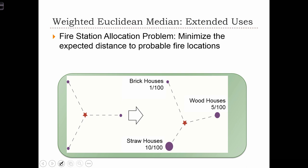There are many cases where we would like to use a weighted Euclidean median. For example, in this case we are trying to locate a fire station in order to minimize the distance to probable fire locations.